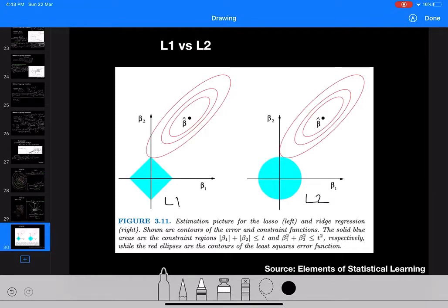The red contours are the function we are trying to optimize, and beta hat is basically the optimal value if it was an unconstrained problem.